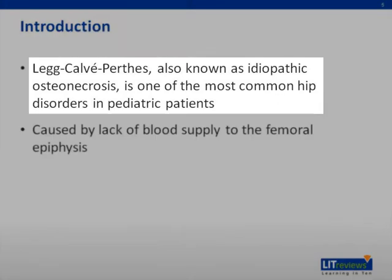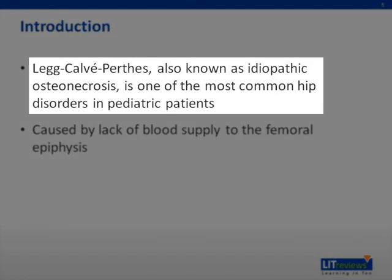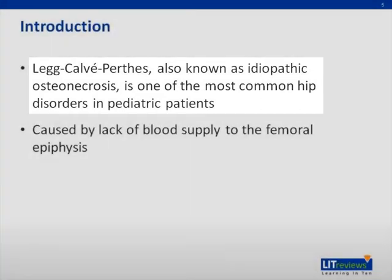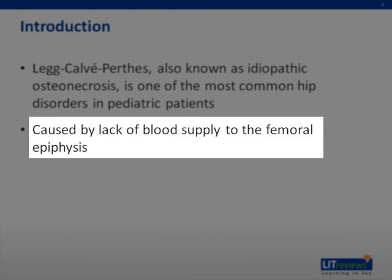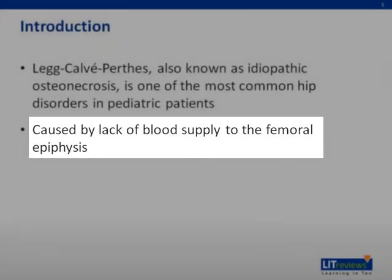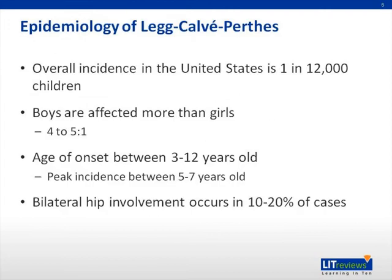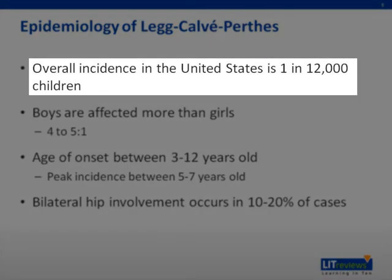Legg-Calvé-Perthes is one of the most common hip disorders in pediatrics. It is also known as idiopathic osteonecrosis, as the etiology is unfortunately still unknown. It is caused by the lack of blood supply to the femoral epiphysis, but why this happens is not quite clear. The overall incidence in the U.S. is estimated to be 1 in 12,000 children, so it is rare.